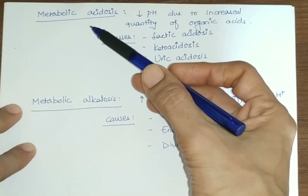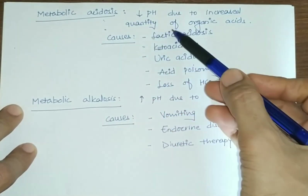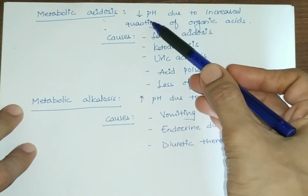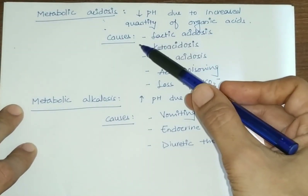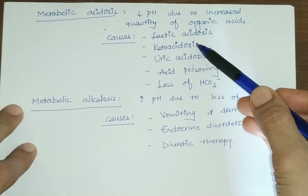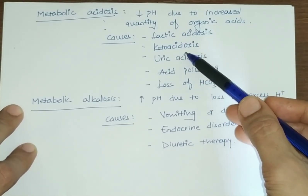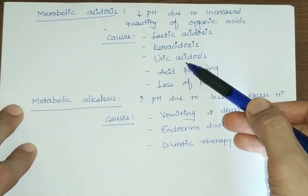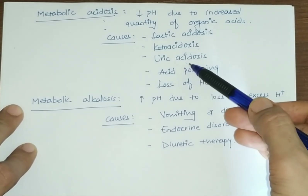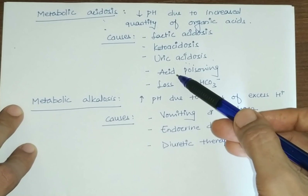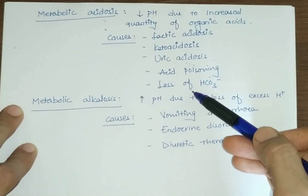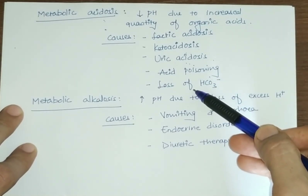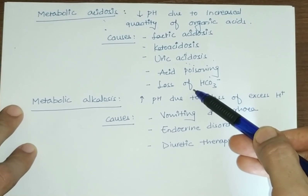In metabolic acidosis, pH decreases due to increased quantities of organic acids. Common causes include lactic acid production causing lactic acidosis, keto acid production in diabetes causing ketoacidosis, uric acid accumulation commonly seen in kidney failure, acid poisoning, and excessive loss of bicarbonate ions.